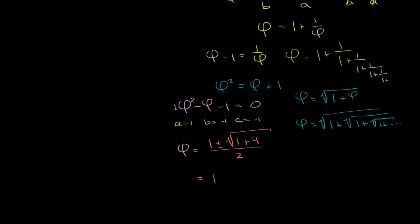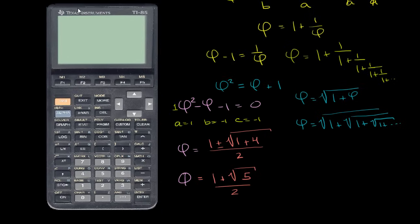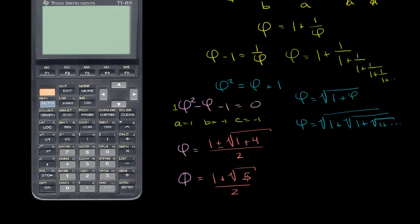Phi is equal to 1 plus the square root of 5 over 2. We only care about the positive solution — if you have 1 minus the square root of 5, you get a negative in the numerator. So this seems like a pretty interesting number. Let's take a calculator out and evaluate it. You might recognize that the square root of 5 is an irrational number, so this whole thing is going to be irrational — it never repeats and goes on and on forever.